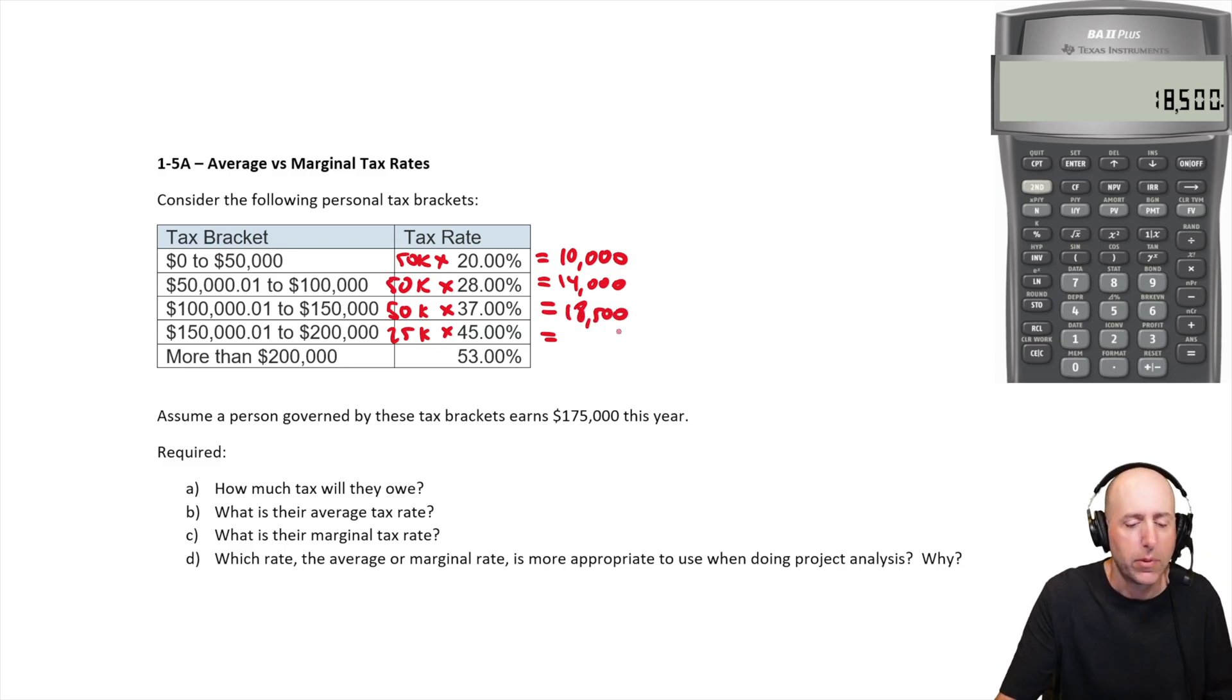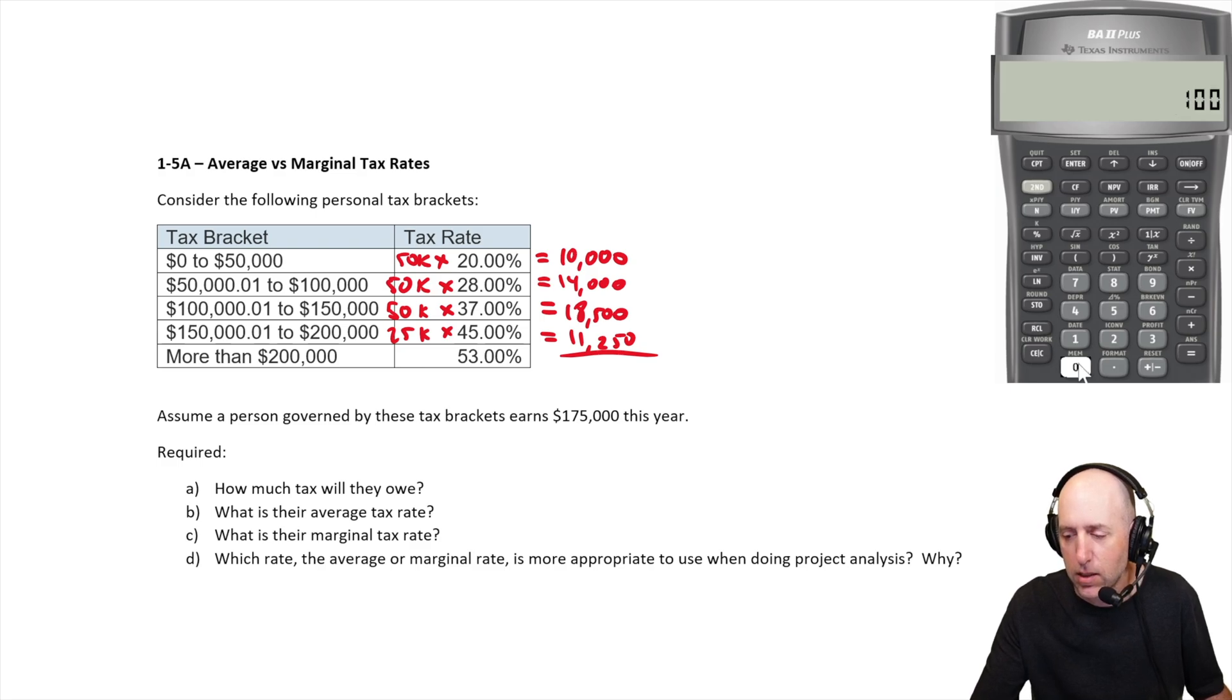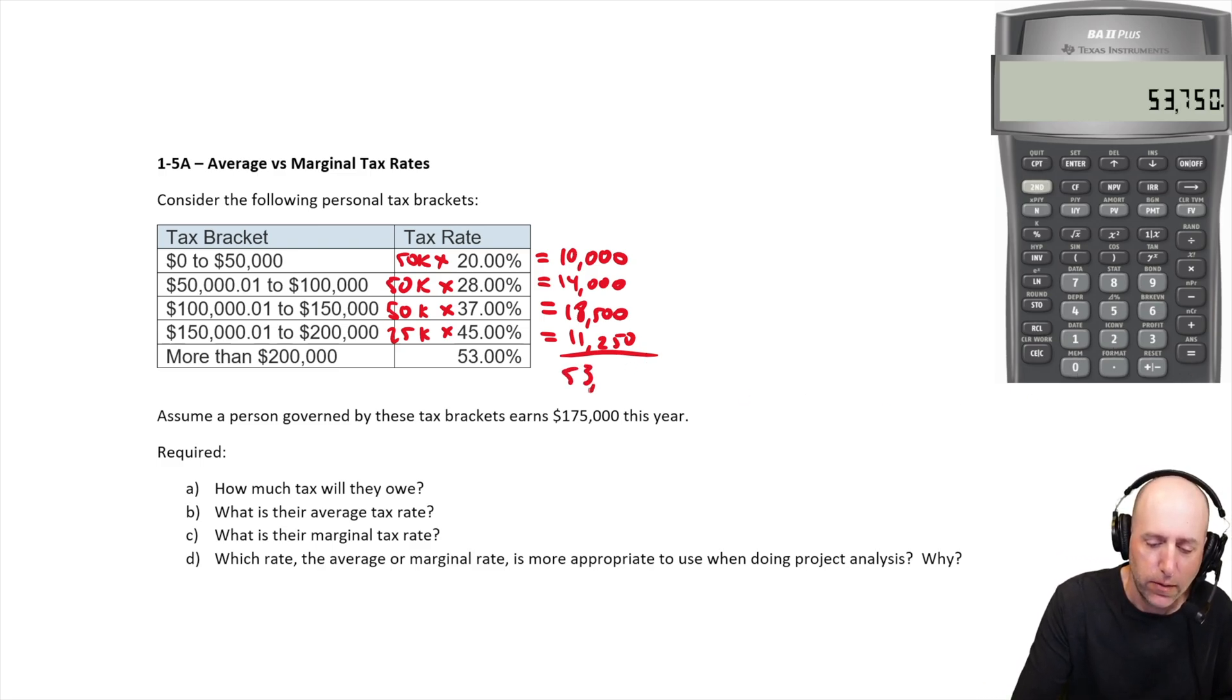$18,500. And last but not least, 25,000 times 45%. Is $11,250. Okay, so then our total tax bill here is going to be $10,000 plus $14,000 plus $18,500 plus $11,250. Our total tax bill is $53,750.